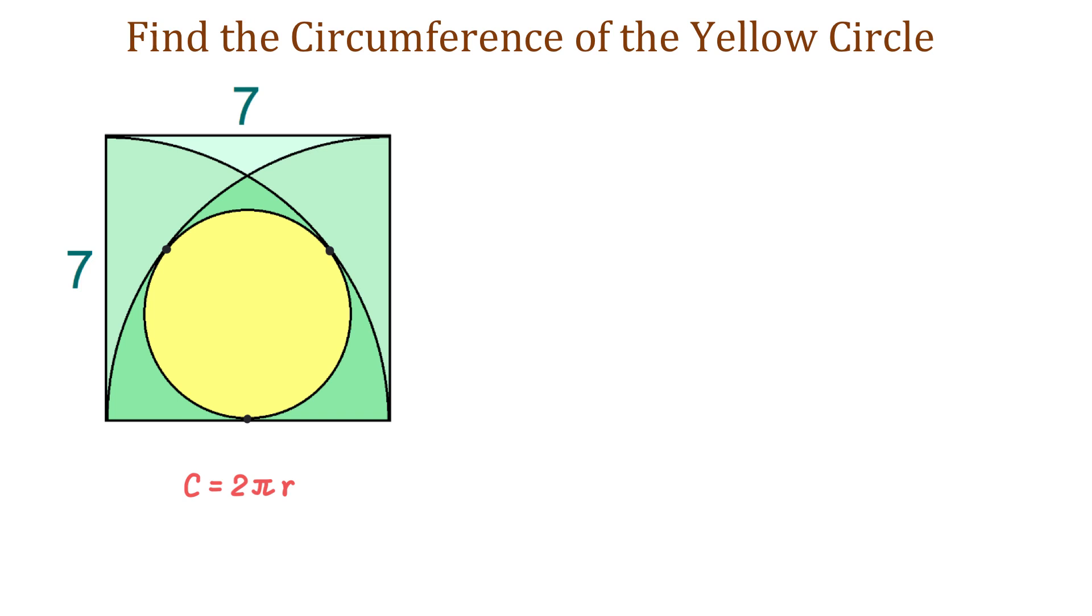We know that each side of the square is 7 units and the radius of each quarter circle is also 7 units. We will start by drawing the radius of one of the quarter circles and let it pass through the center of the yellow circle.